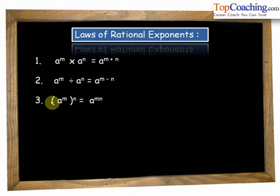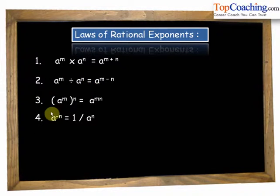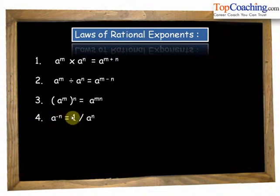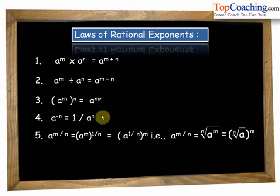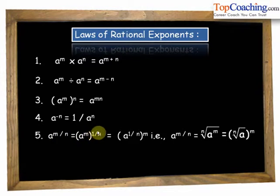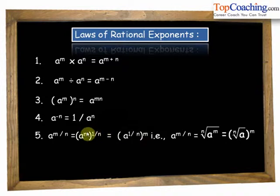The fourth rational exponent law is that a to the power of minus n equals 1 by a to the power of n — whenever we have a negative exponent we write it as 1 by a to the power of n. The fifth is a to the power of m by n equals a to the power of m whole to the power of 1 by n, which also equals a to the power of 1 by n whole to the power of m. We can interchange the powers.